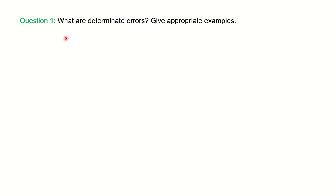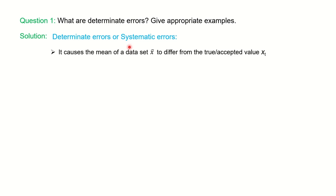Our very first question is: what are determinate errors? Give appropriate examples. First we will see the definition or the points which describe the determinate error. It causes the mean of the data set, represented by x-bar, to differ from the true or accepted value. The mean of the data set differs from the true value here. We will see the example later.